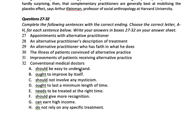Now let's translate the endings. A: 'should be easy to understand.' B: 'ought to improve by itself' — it should get better on its own. C: 'should not involve any mysticism' — mysticism means believing that faith or prayer can heal something, so no mysticism should be involved. D: 'to last a minimum length of time' — it should last for a certain specific time. E: 'needs to be treated at the right time.' F: 'should give more recognition.' G: 'can earn high income.' H: 'do not rely on any specific treatment' — they don't depend on any specific treatment.